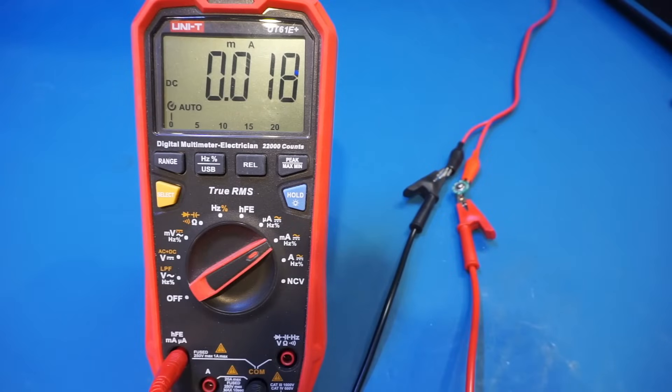As you can see, the standby current is only at 18 microamps, which is actually very low, so the battery self-discharging should not be a major concern here.